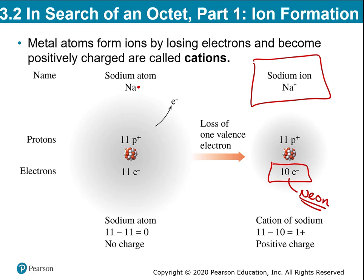But now sodium doesn't have equal numbers of protons and electrons. When you have unequal numbers, you have what is called an ion. Sodium becomes a positively charged ion called a cation. It has 11 protons and only 10 electrons, giving it a positive charge. This is why when you see sodium written, you see Na+ — that indicates a sodium ion versus a sodium atom.